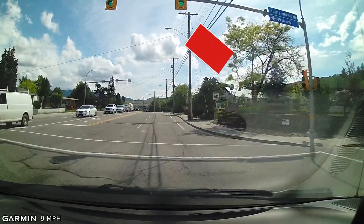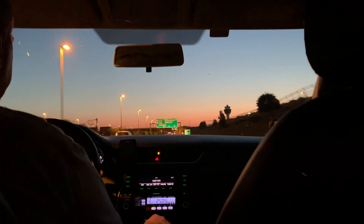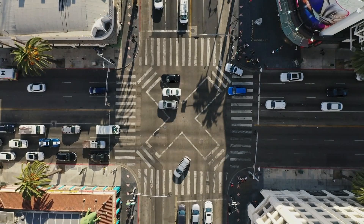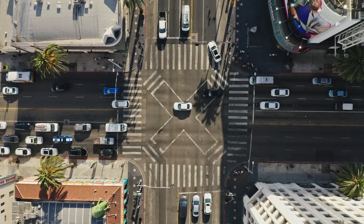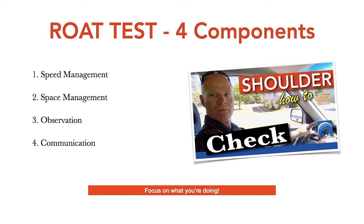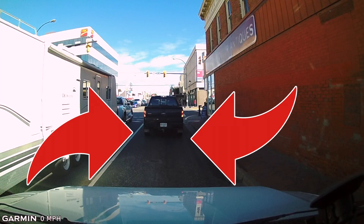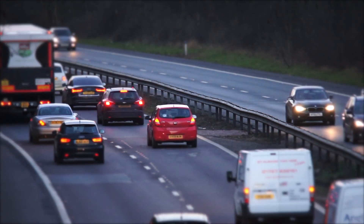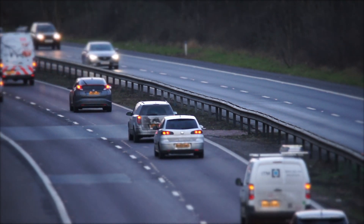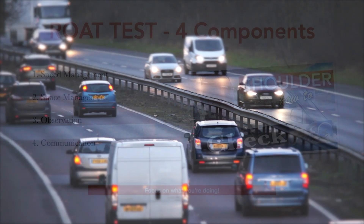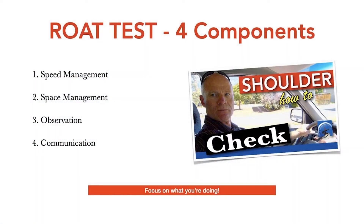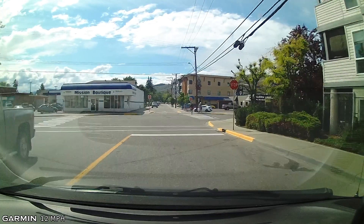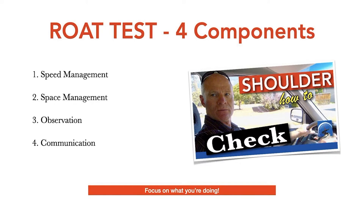Speed management means you do the posted speed limit or the flow of traffic, whichever is less. Space management means if you're not near anything, it's less likely you'll hit something — maintain a following distance of two to three seconds minimum, stop at the correct position at controlled intersections, and in a queue of traffic stop so you can see the tires of the vehicle in front making clear contact with the pavement. Communication includes lights and signals, your horn used sparingly, eye contact, hand gestures using all five fingers, and the position of road users on or near the roadway — for example, a pedestrian near a crosswalk likely intends to cross, and a vehicle in the left turning lane likely intends to turn left.